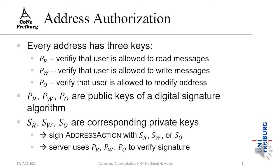Address authorization is very important. If addresses were random and everyone could open and read or write to them, it would be chaos. For every address there are three different keys: PR is a key to verify the user is allowed to read messages, PW is to verify the user is allowed to write messages, and PO is to verify the user is allowed to modify the address. These three keys are public keys of a digital signature algorithm, and the corresponding private keys are SR, SW, and SO.